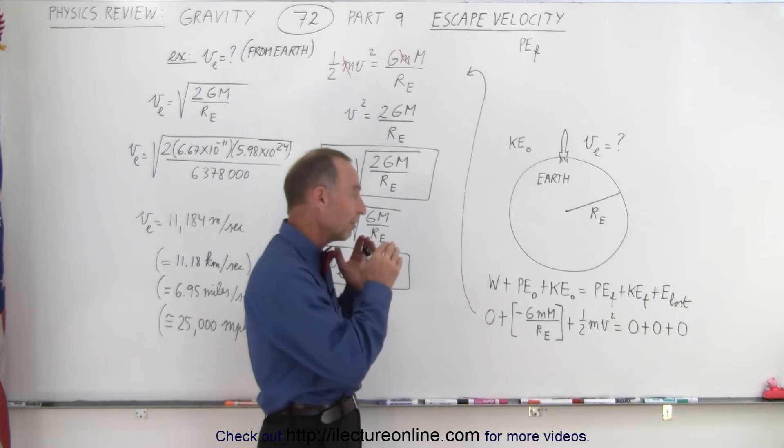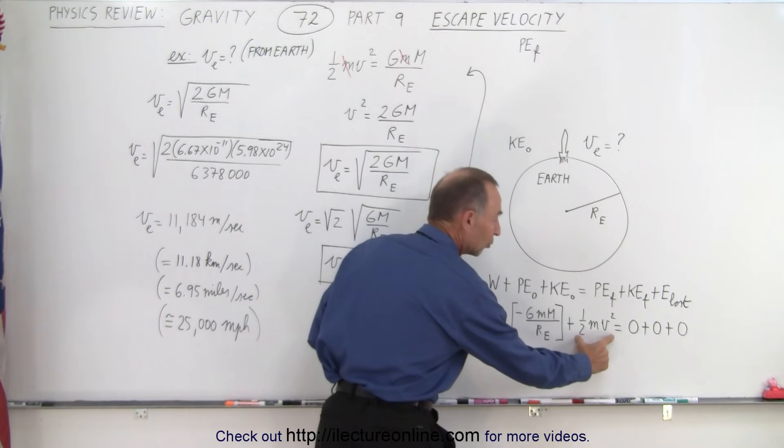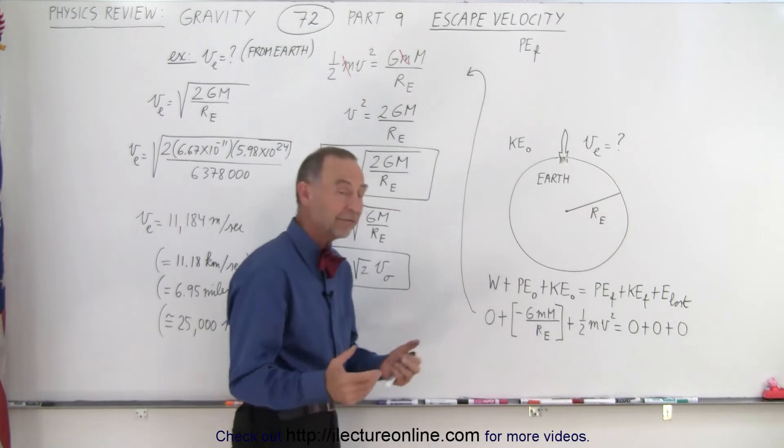so we don't lose any energy and sure we're doing work with the engines but let's assume that we do the work with the engines and that results in having a certain amount of kinetic energy so we call this zero and we give all that work into the form of kinetic energy, one half mv squared.